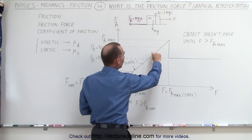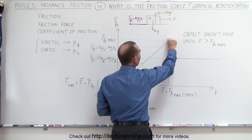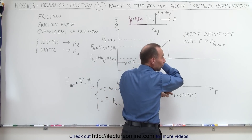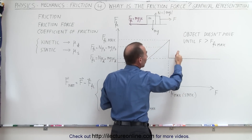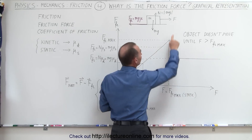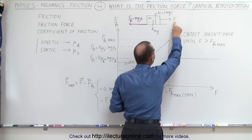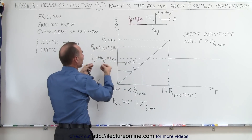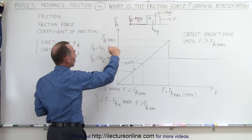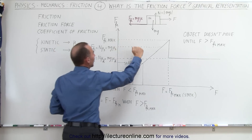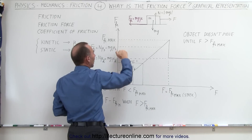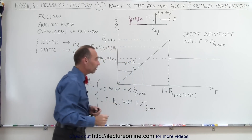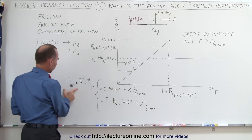From having a zero difference between the pulling force and the friction force, all of a sudden you have a large difference — 10, 20, or 30 newtons. The object will lunge forward, and then at that point the object will continue to accelerate as long as the pulling force is greater than the friction force offered by the kinetic coefficient of friction. So the friction jumps from the maximum static friction force down to the maximum kinetic friction force, and then the object begins to accelerate as long as you maintain that net force.